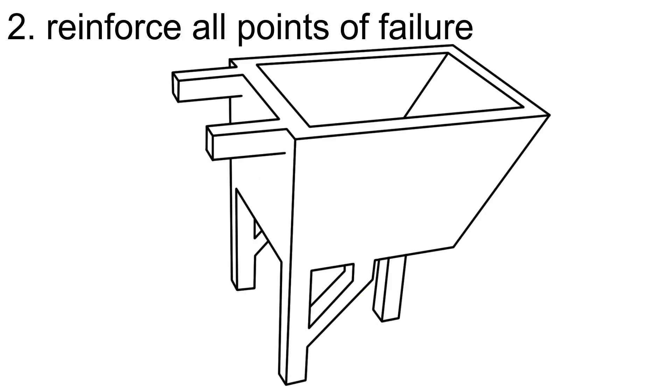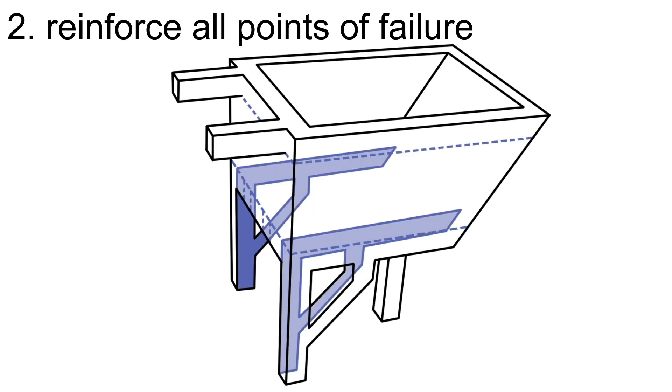In the second step, FastForce reinforces the points of failure. FastForce starts by reinforcing the weakest points of failure. To stop the tray from falling in, the bottom plate is extended and anchored into the sides of the wheelbarrow. To stop the legs from being pulled out, FastForce chooses two parallel plates and extends them into the body. The handles and back legs are reinforced in a similar way.